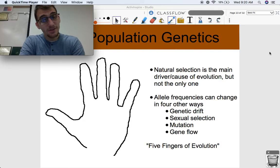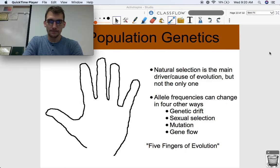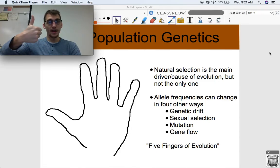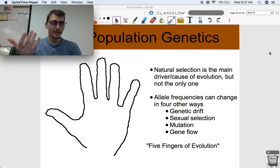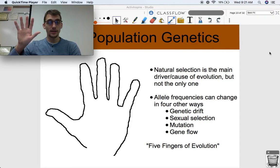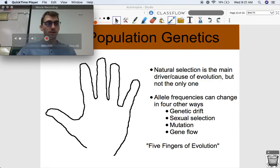Natural selection is the main driver and cause of evolution, but it's not the only way that allele frequencies can change. Natural selection is a big one - individuals with the best traits are going to survive and reproduce and pass down those traits, and that's going to change the allele frequencies in a population. But allele frequencies can change in four other ways. We're going to use natural selection to describe our thumb, because natural selection approves of traits that help organisms survive. But these other four fingers represent genetic drift, sexual selection, mutation, and gene flow.